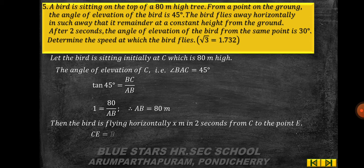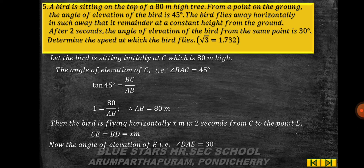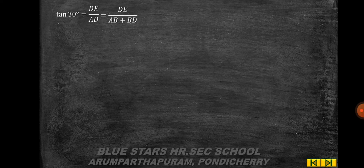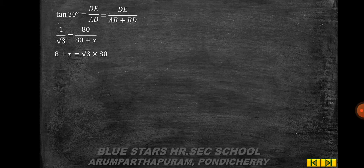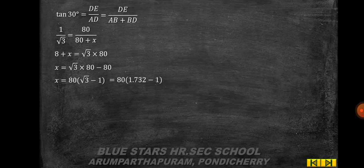The bird flies horizontally x meters in 2 seconds from C to E, so CE = BD = x. The angle of elevation of E is ∠DAE = 30°. tan 30° = DE/AD = 1/√3 = 80/(80 + x). So 80 + x = 80√3, giving x = 80(√3 − 1) = 80 × 0.732 = 58.56 meters.